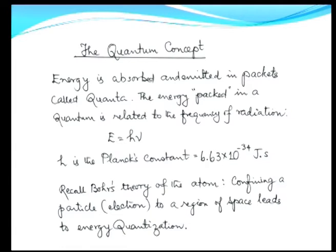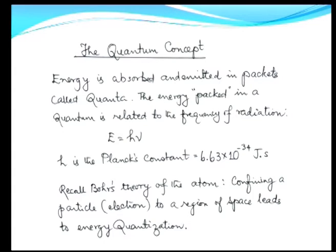Early in your learning you found out about Bohr's theory of the atom — how by confining a particle, in this case an electron, into a region of space around the nucleus of the hydrogen atom, such confinement leads to energy quantization. The electron can only take discrete values, unlike Newtonian mechanics where there is no such restriction and energy is continuously variable for a particle moving under any force field. That is the distinction between the quantum and the classical concept.